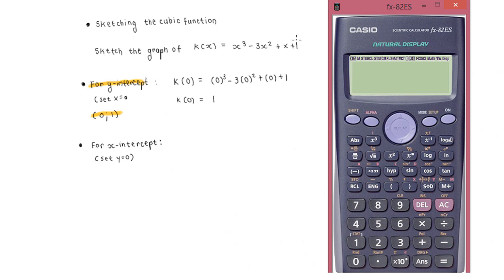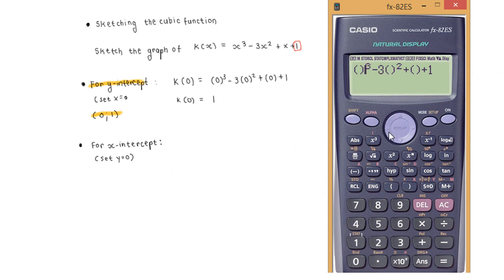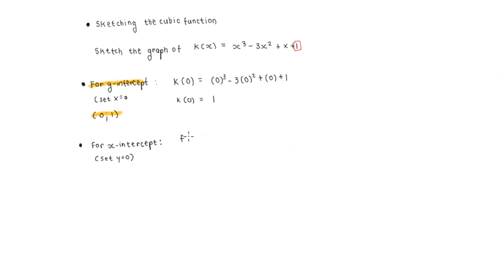Usually what I do is look at my value of d and try to find the factors of that value. In this case, d is 1, and the factors of 1 are simply just 1. So the easiest thing to do is to test either positive 1 or negative 1. If neither of those two work, we'll move on to something else. Let's first try positive 1. Right at the first go, we get an output of 0. So once you have that, you know that f(1) gave you an output of 0, therefore x − 1 is our first factor.